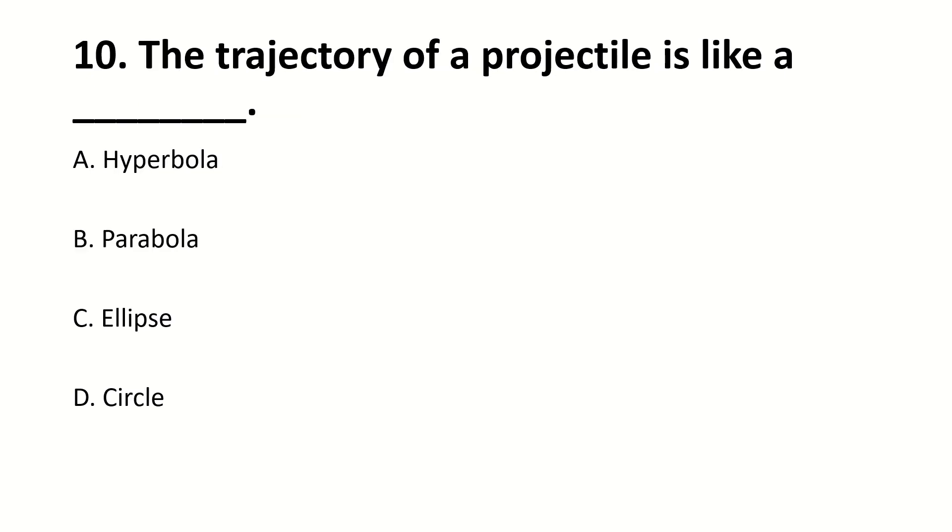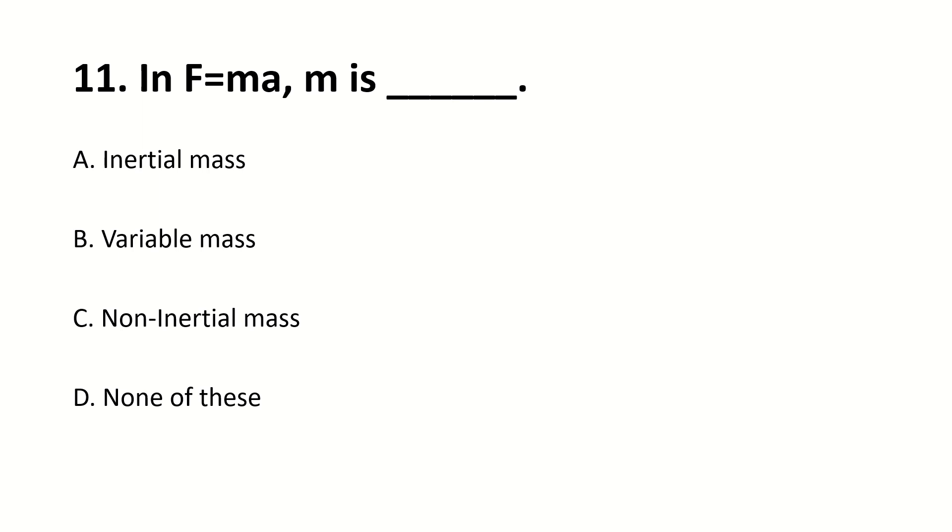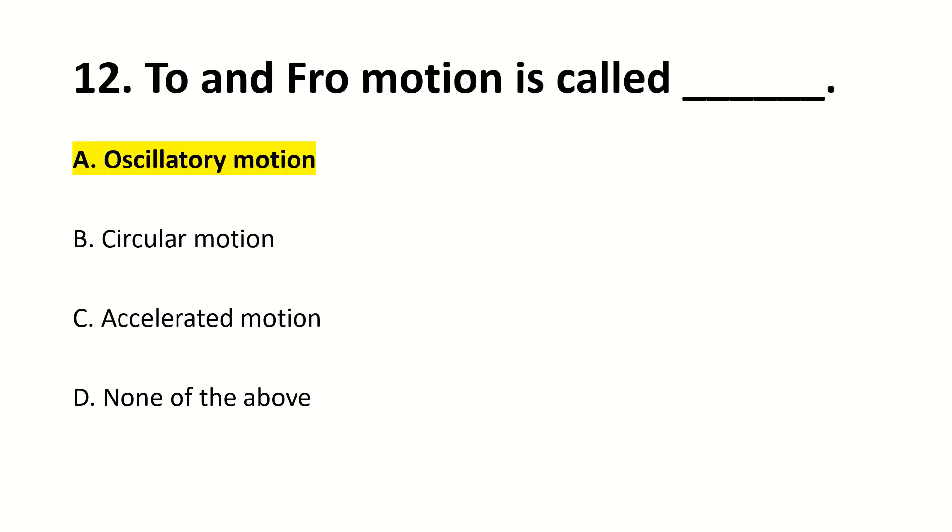The trajectory of projectile motion is like a dash shape. So right answer is parabola. In F equals MA, M is dash, inertial mass.